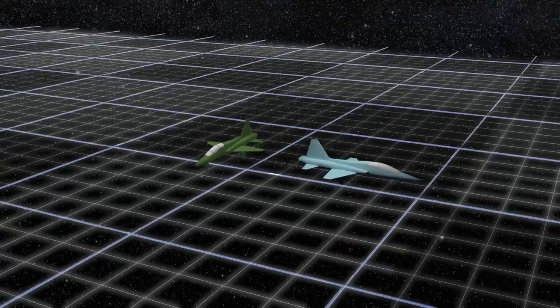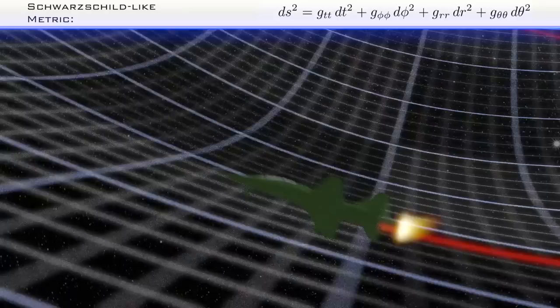But rather than hang around in boring old flat spacetime, the authors take this setup and embed it in a curved spacetime with a Schwarzschild-like metric. Or, in other words, they place a mass in the center of Bob's circular path.